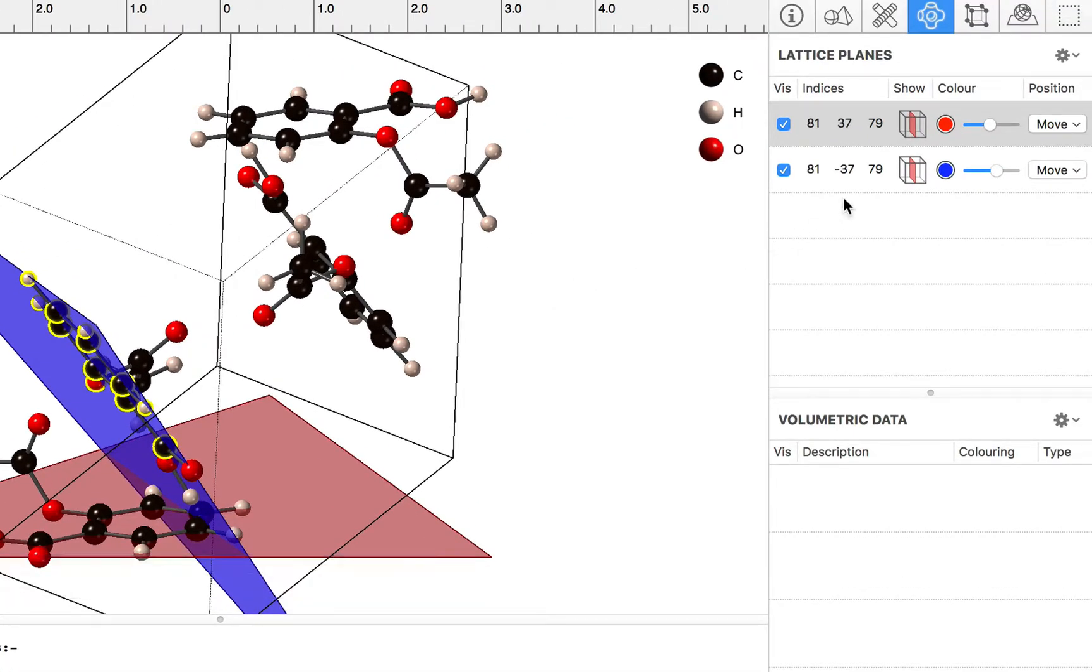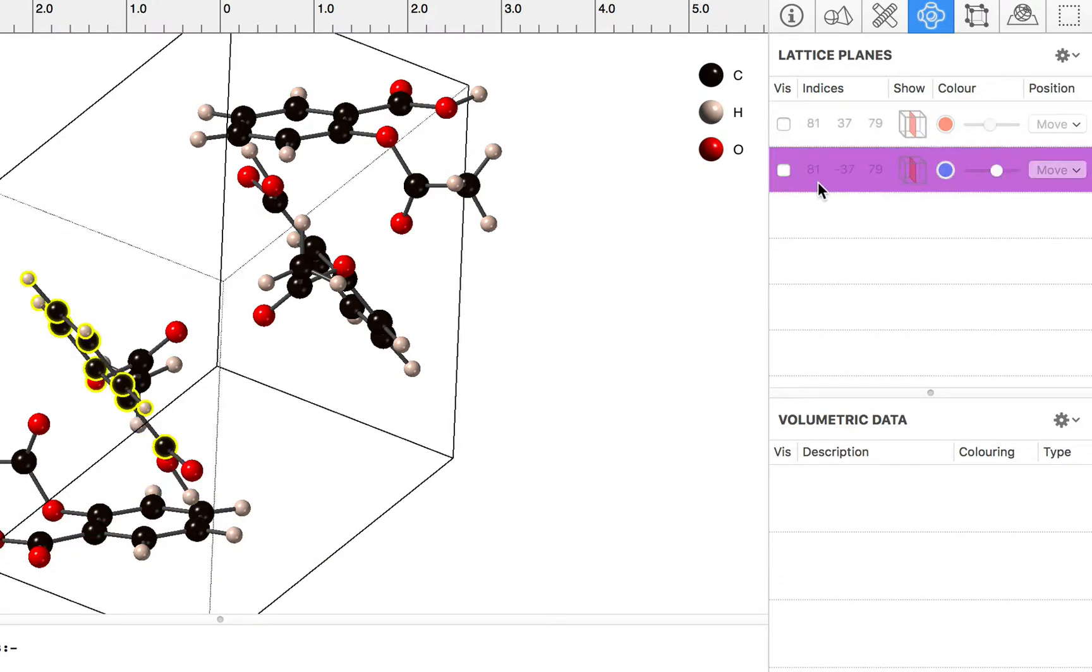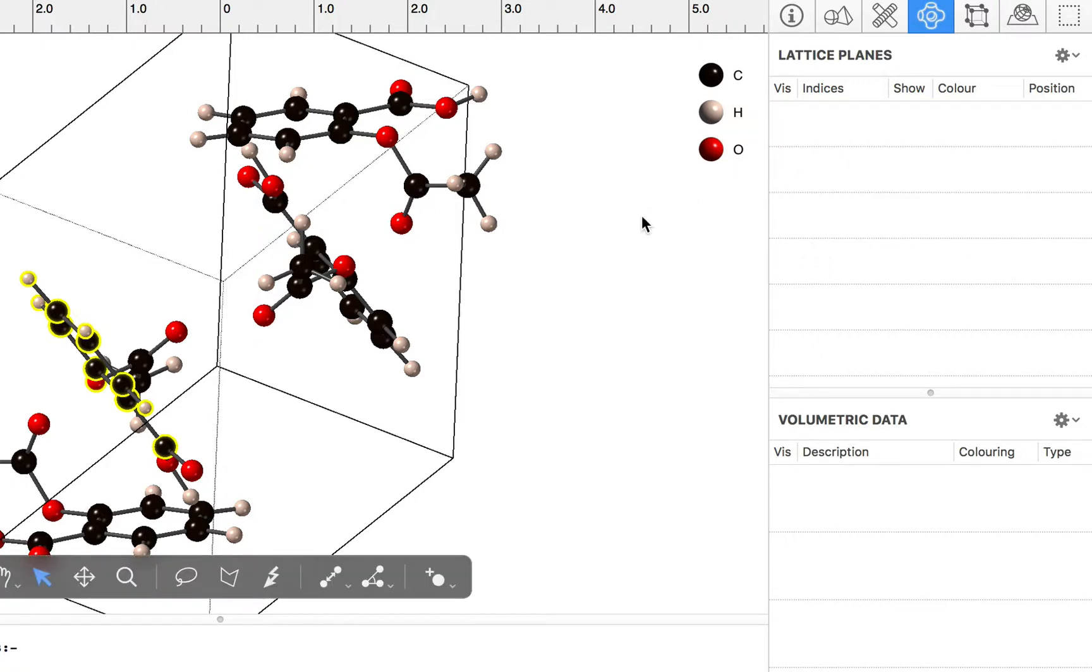Now once we've finished with those planes, we can turn them off by unclicking their checkboxes, and if we want to get rid of them completely we can select their list rows and press the delete key to delete them.